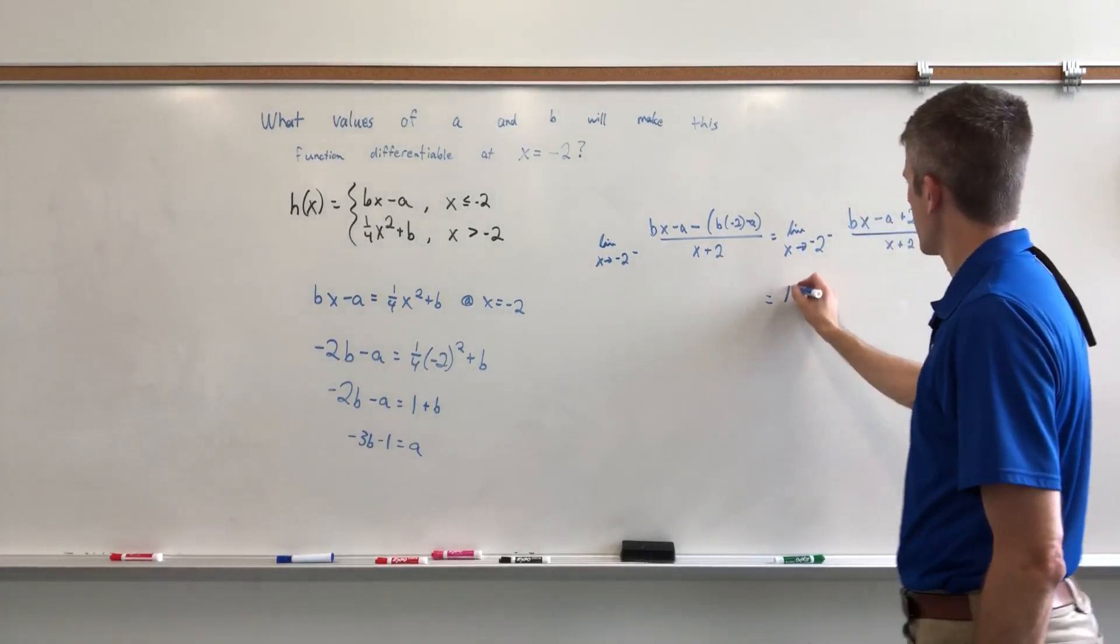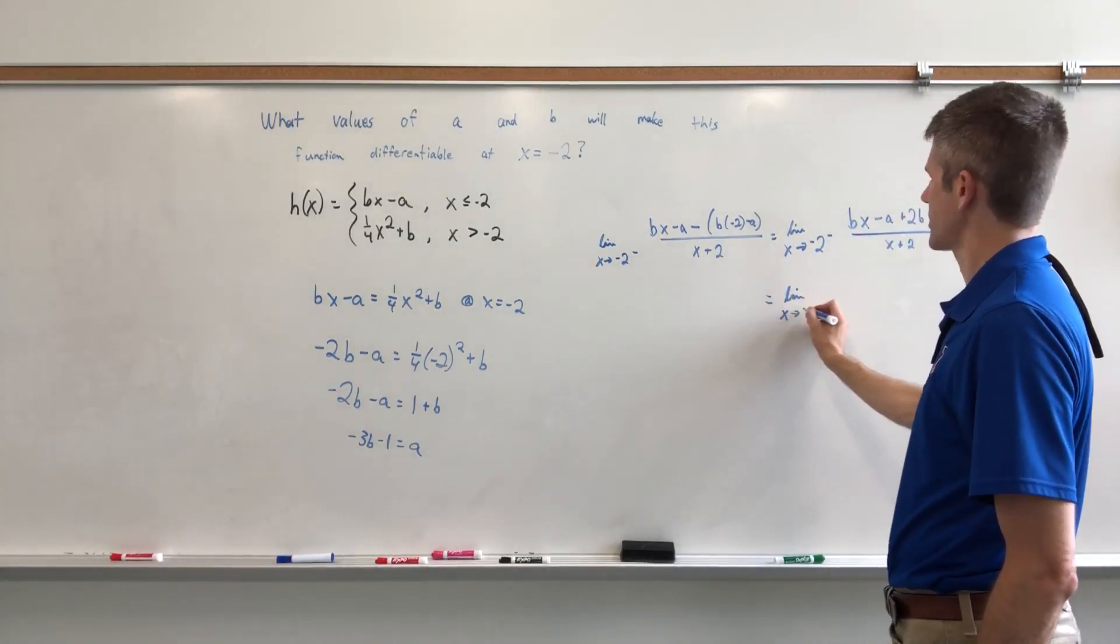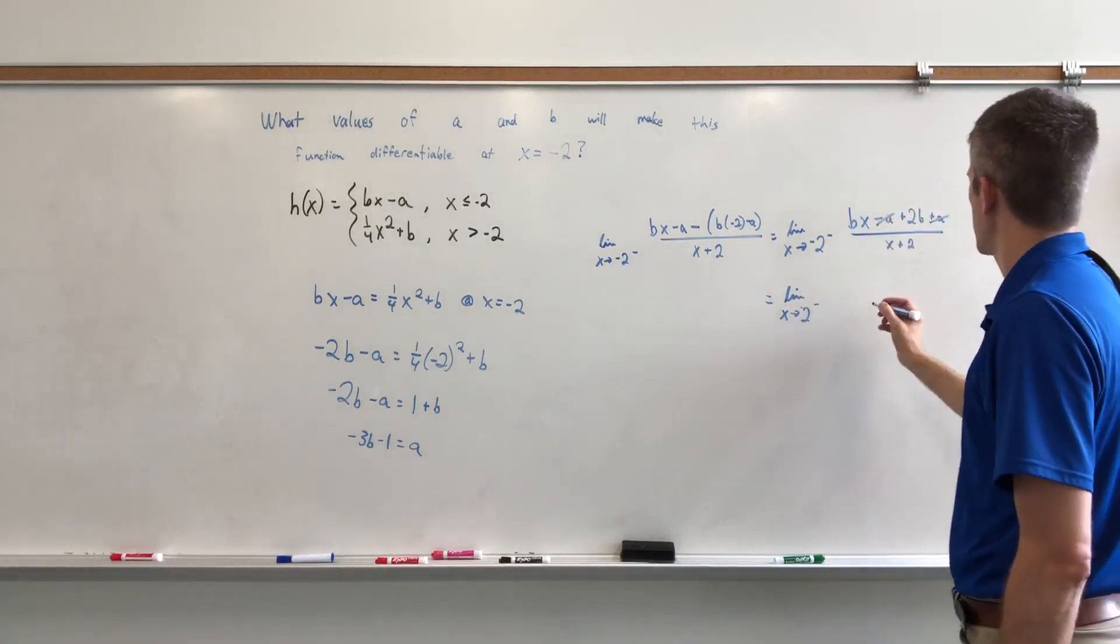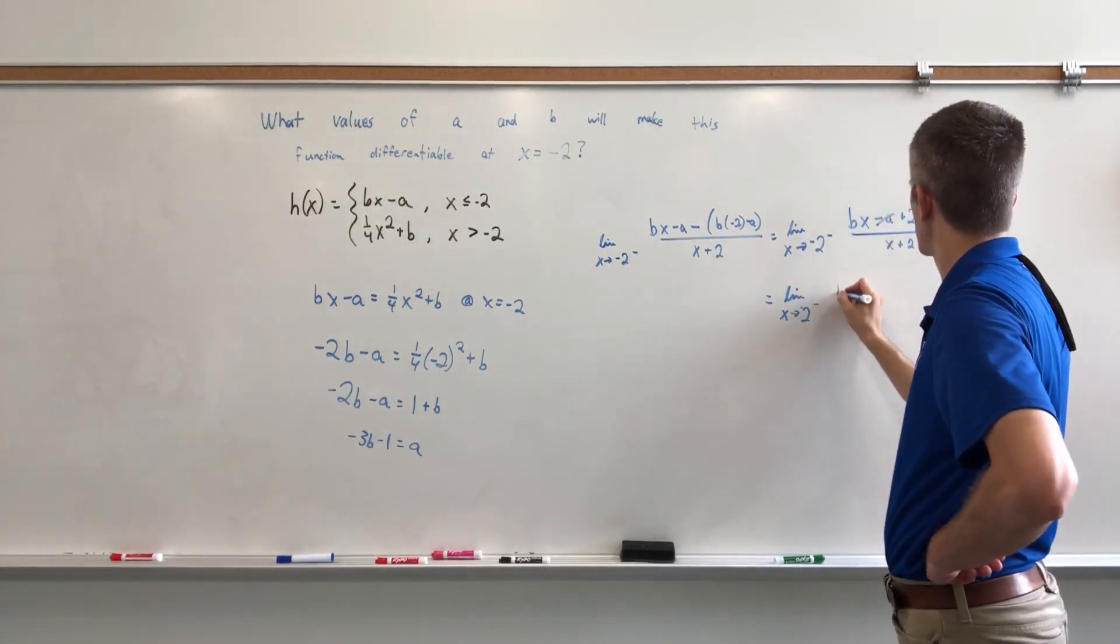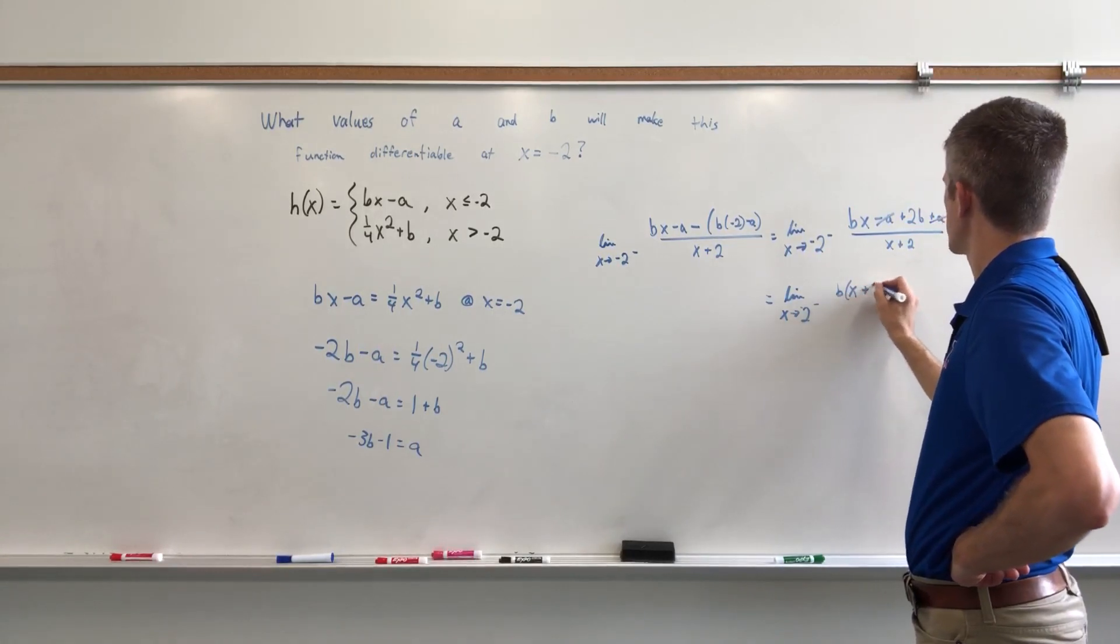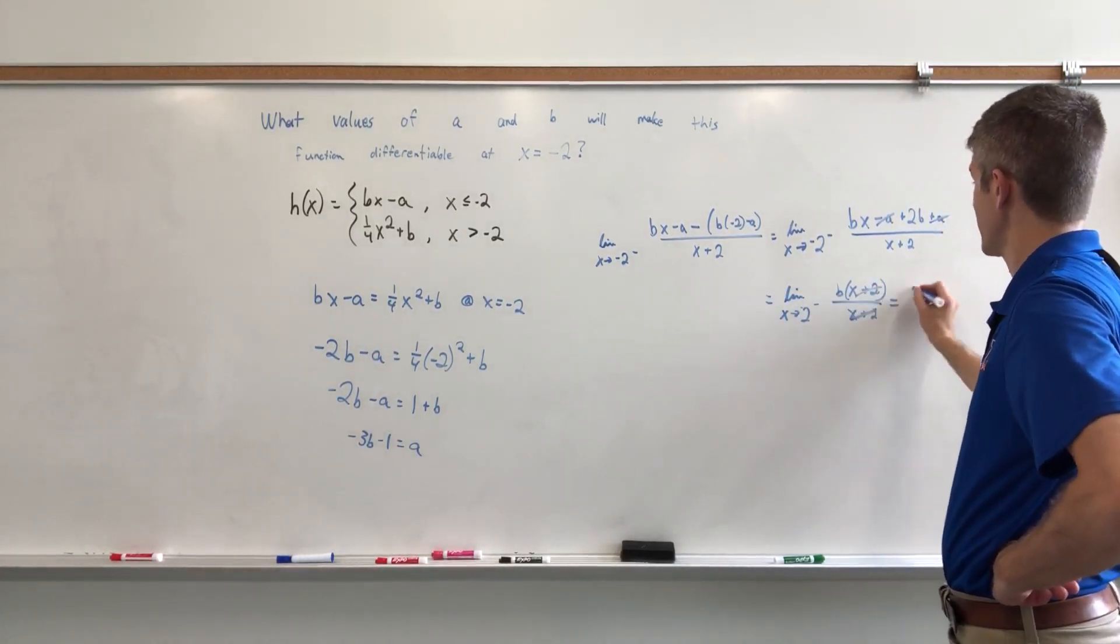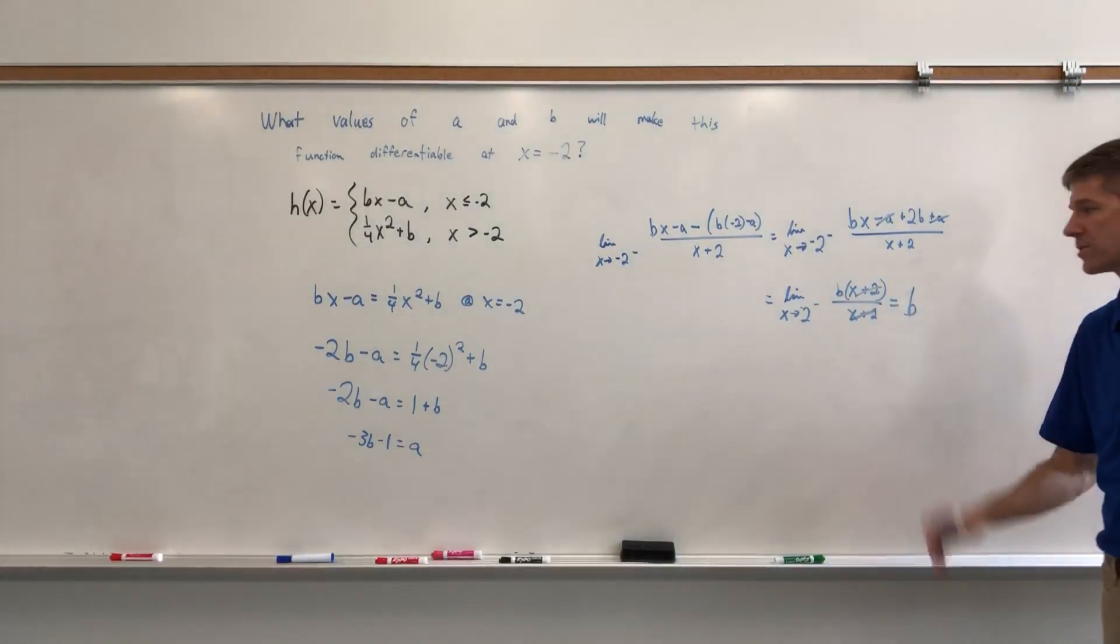And then X plus 2. Here we go. We have the limit as X approaches—sorry, something seemed very wrong for a second, but it's not. These A's cancel, and I have B, X plus 2, and then X plus 2. And then X plus 2's cancel, and I'm left with B. So yay, it works. Fantastic.